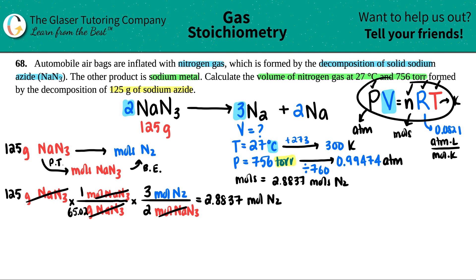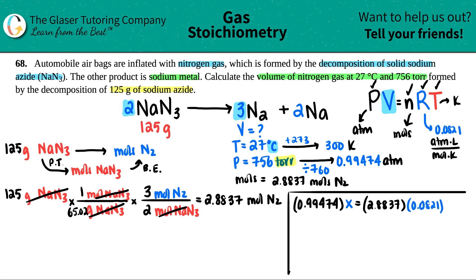So let's go. I'm just going to box this off. And I'm going to work from left to right. So the pressure in ATM, 0.99474 times by the volume, which is X. This equals the moles, which we just found, 2.8837 times by the R value, 0.0821 times by the temperature, 300 Kelvin.